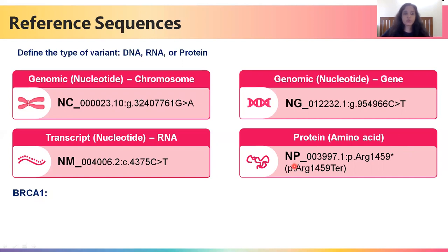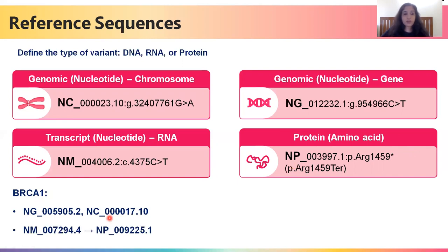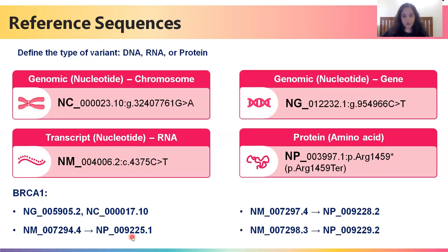For example, looking at BRCA1, we see that there are unique NG and NC IDs. However, there are multiple NM and corresponding NP IDs. Why is this the case? The reason is due to the presence of multiple transcripts.